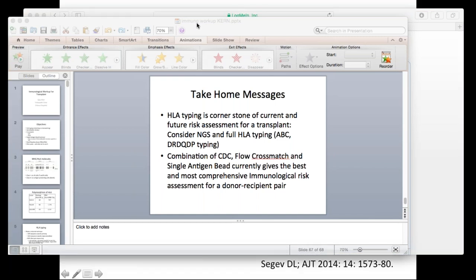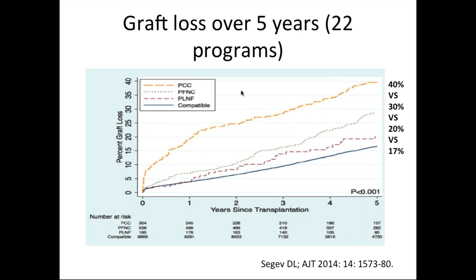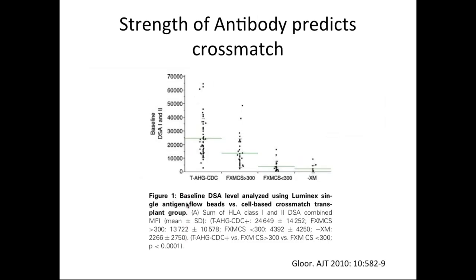The strength of the antibody predicts the crossmatch result, though not perfectly. CDC crossmatch tends to turn positive around an MFI of 25,000, but there's a wide distribution. A strong flow crossmatch with mean channel shift of 300 corresponds to roughly 15,000 MFI; a lower-intensity positive flow crossmatch corresponds to around 5,000 MFI; a negative crossmatch is at lower levels. There is gradedness with significant overlap. The strength of the crossmatch also predicts antibody-mediated rejection.